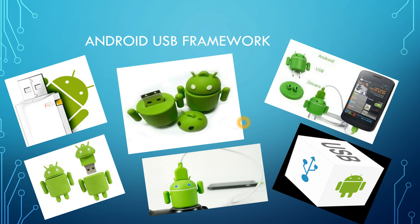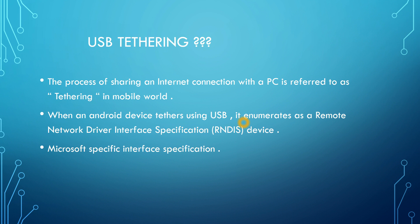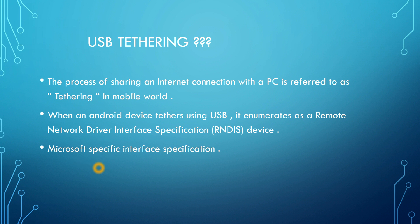Hope you all remember me — myself Dimpleyer. So first, we will see what is USB tethering. The process of sharing an internet connection with a PC is referred to as tethering in the mobile world. There are many different ways through which your device can share internet with your PC — it can be USB, Wi-Fi, or even Bluetooth. So when an Android mobile device tethers using USB, it enumerates as a Remote Network Driver Interface Specification (RNDIS) device.